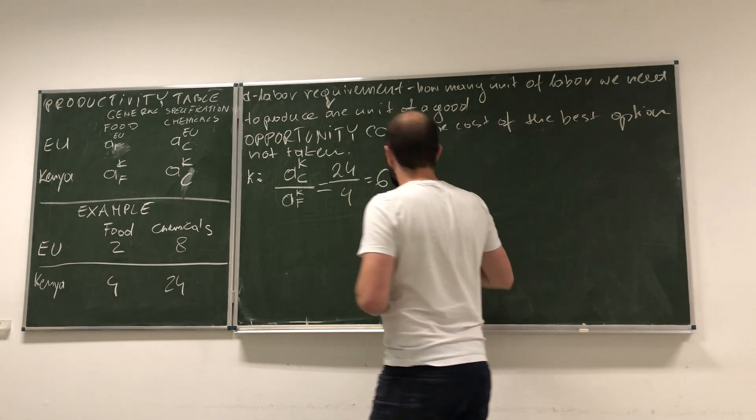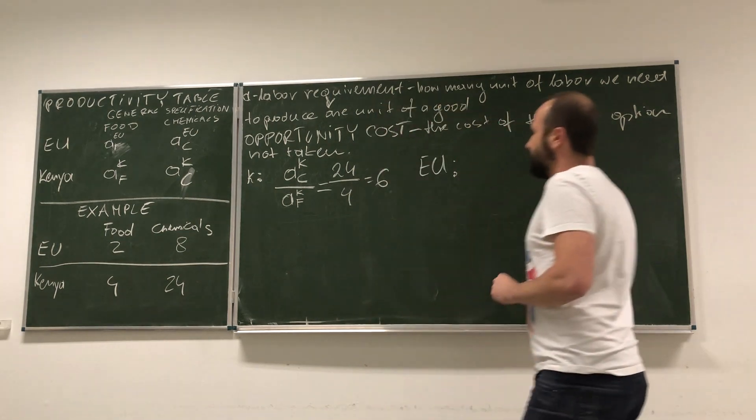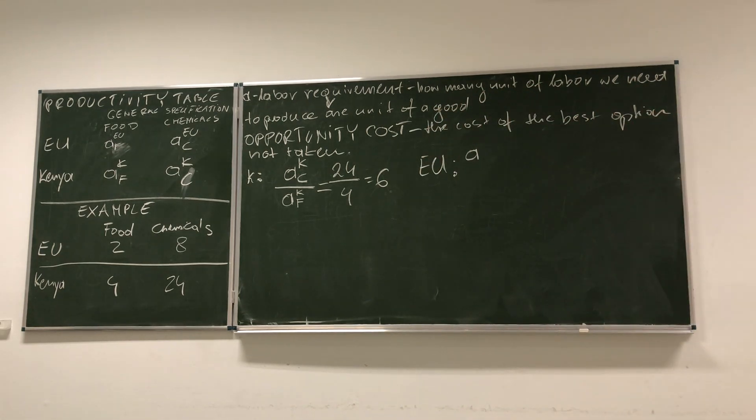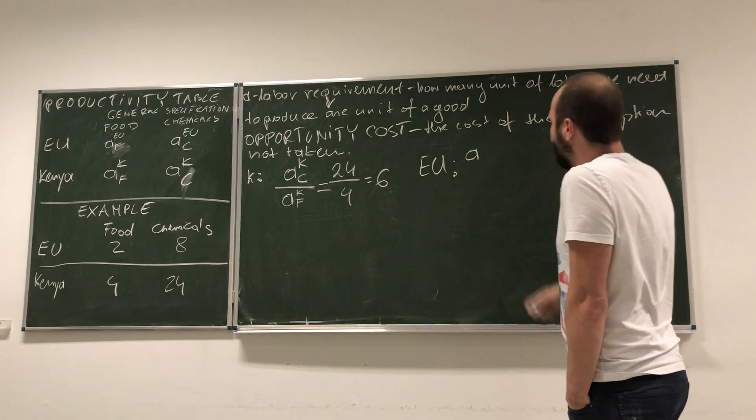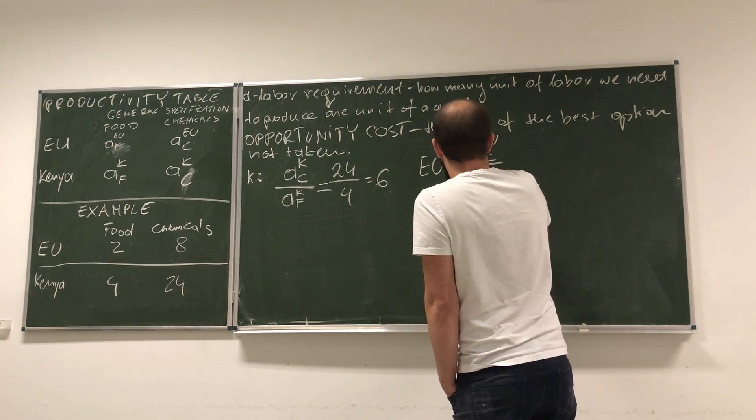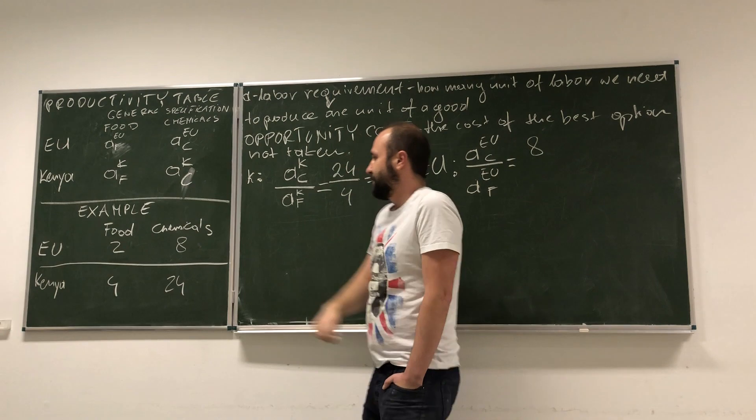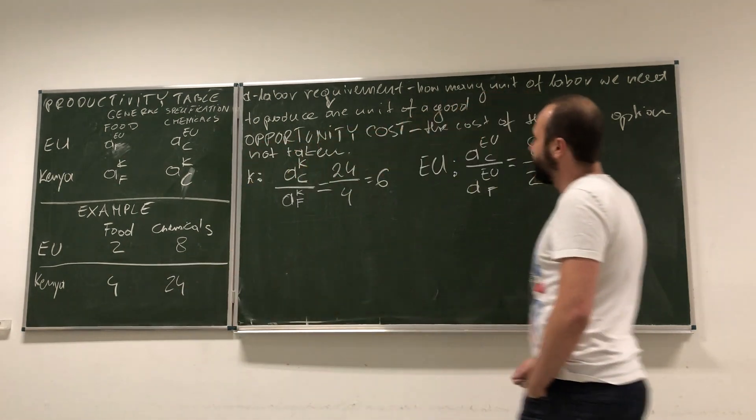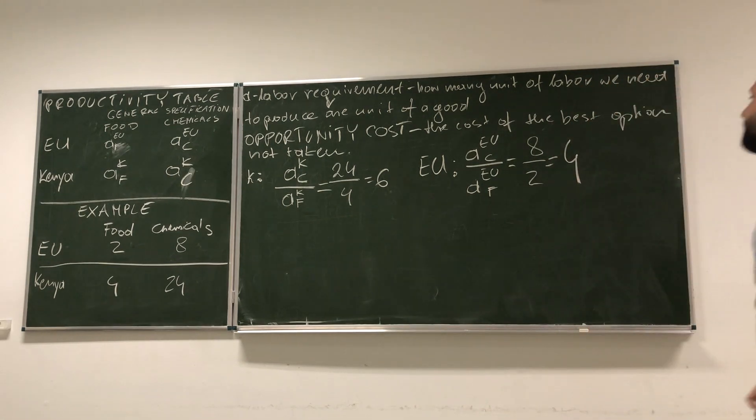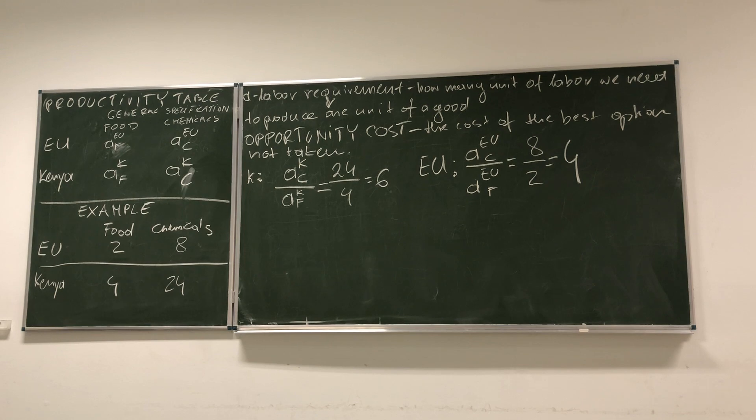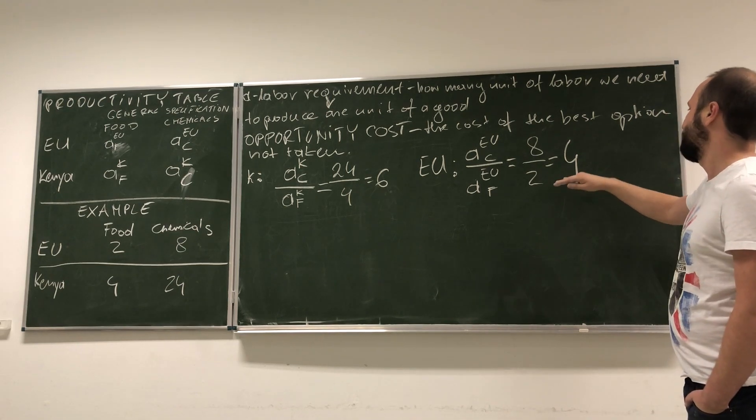Now, let's see how it works in EU. So, in EU, if we want to calculate the same thing, the opportunity cost of producing one more unit of chemicals, all we have to do is to take A EU C over A EU F. So, we get 8, labor requirement in EU for chemicals, divided by 2, labor requirement in food industry. And look, we get 4. What does it mean? Look, this means that if EU wants to produce one additional unit of chemicals, it needs to give up the production of 4 units of food.